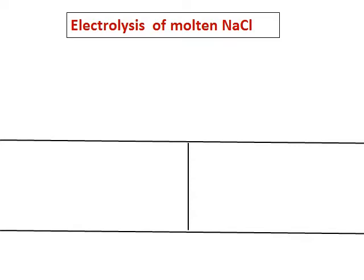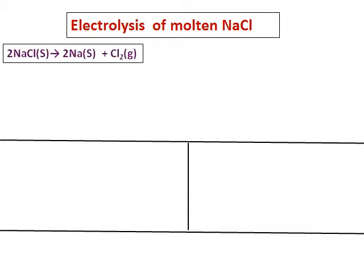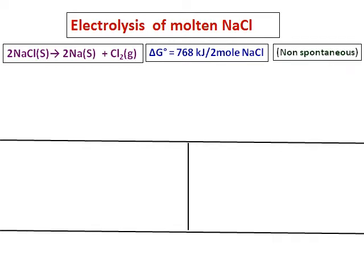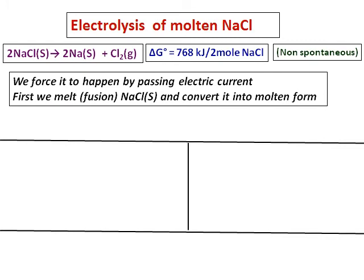Let's consider the electrolysis of molten sodium chloride. Sodium chloride must be in the molten state in order to conduct electricity. Separating sodium chloride into sodium metal and chlorine gas is an almost impossible reaction because the ionic bond between sodium and chlorine is very strong. The value of ΔG° is a positive 768, which confirms that this is a non-spontaneous reaction.